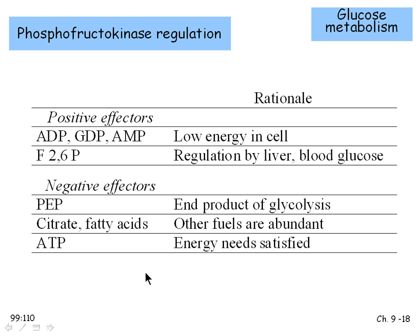Phosphofructokinase has several regulators. Positive effectors — ADP, GDP, AMP — are all markers of low energy status and increase enzyme output. Fructose-2,6-bisphosphate is under hormonal control, allowing pathway regulation across the whole body. Negative effectors include phosphoenolpyruvate (internal to glycolysis), citrate, fatty acids (alternative fuels signaling sufficient energy), and rising ATP levels — all signaling the cell has enough energy and should use glucose for storage rather than catabolism.